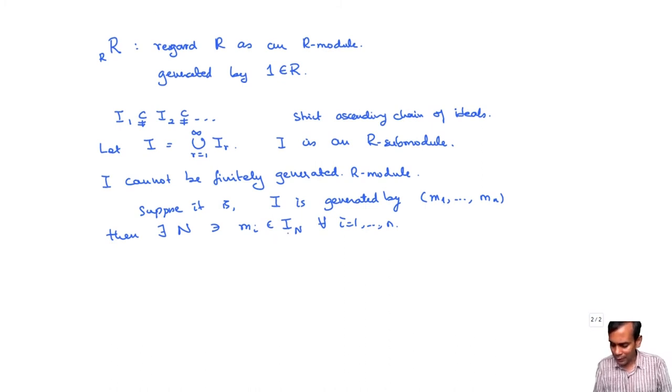But then that means that I_n is equal to I because the M_i's actually generate I. But this contradicts our assumption that I_n is properly contained in I_{n+1} which is contained in I.